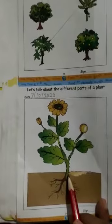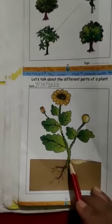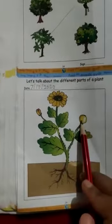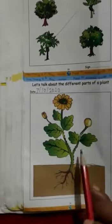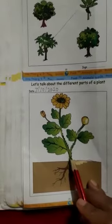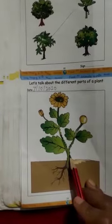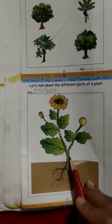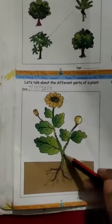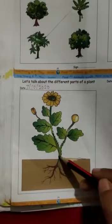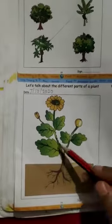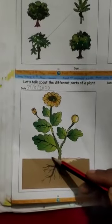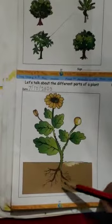The shoot has different parts: first the stem, leaves, flowers, and fruits. The stem is the stalk of the plant. It helps the plant to stand upright. The stem carries water and minerals from the roots to the leaves, and carries food prepared by the leaves to the different parts of the plant.